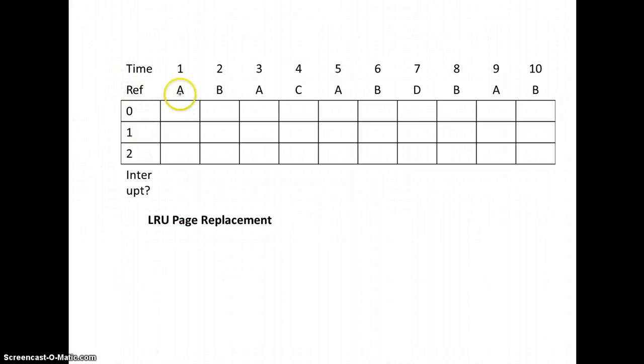All right. So starting off, our first page reference is A. A is not in memory. So the A is loaded in here. And then we do have an interrupt for that. So at the next point in time, we're beginning with memory looking like this with our A. We're referencing B. B is not in memory. So the B is brought in here.